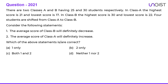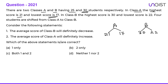Next question: there are two classes A and B having 25 and 30 students respectively. In class A the highest score is 21 and the lowest score is 70. In class B the highest is 30 and the lowest is 22. Four students are shifted from class A to class B. In class A, even the topper is getting less score than the last student of class B. So even if four toppers are shifted from class A to class B, they will actually be decreasing the average of class B.